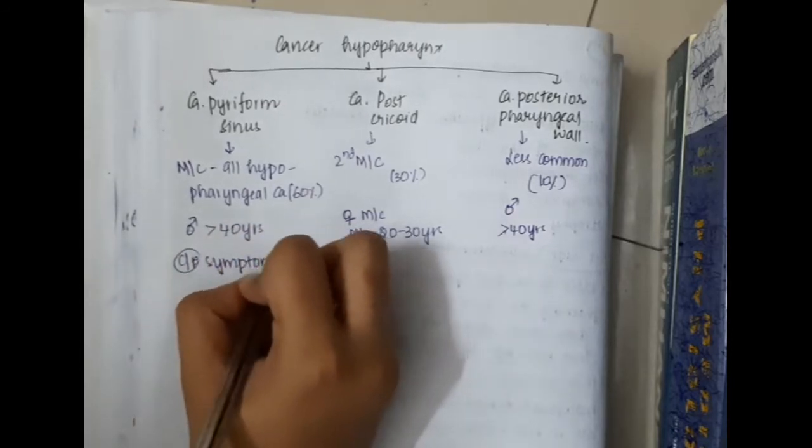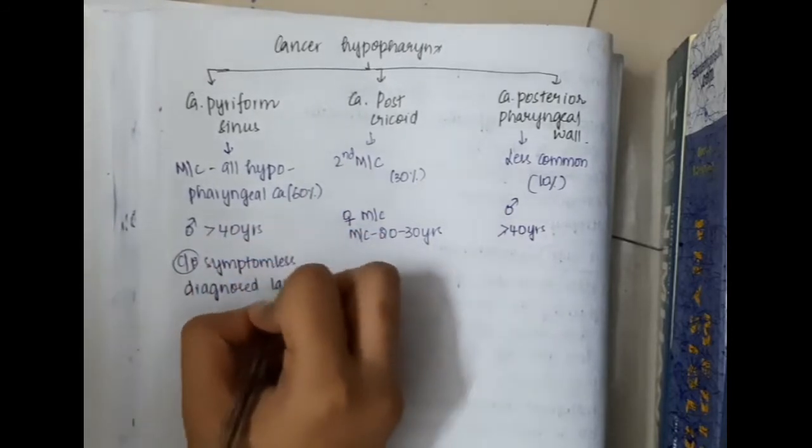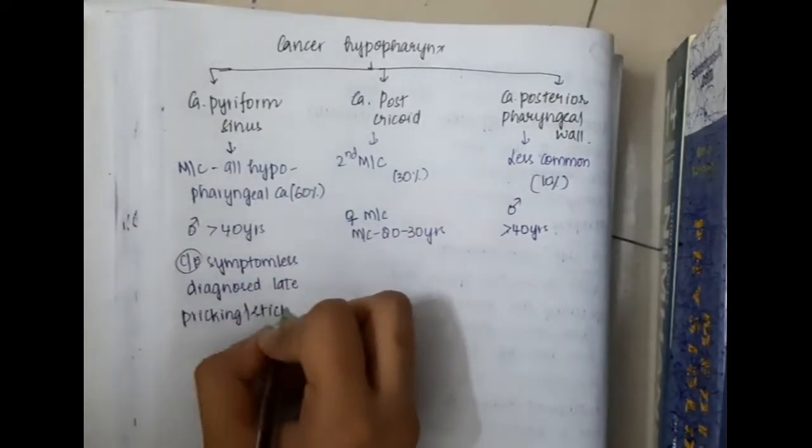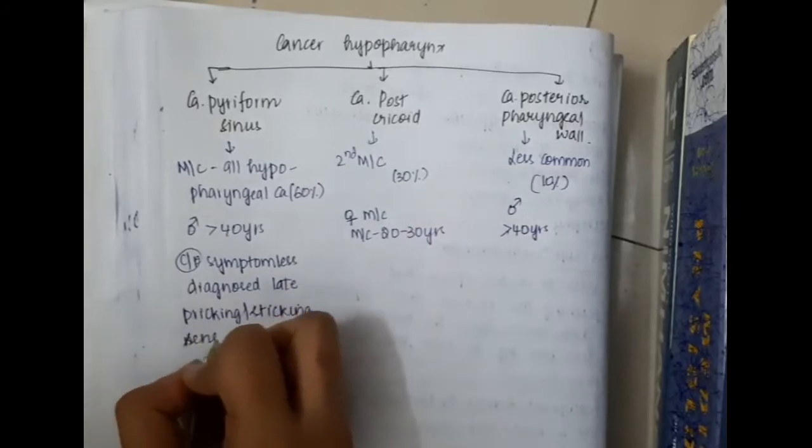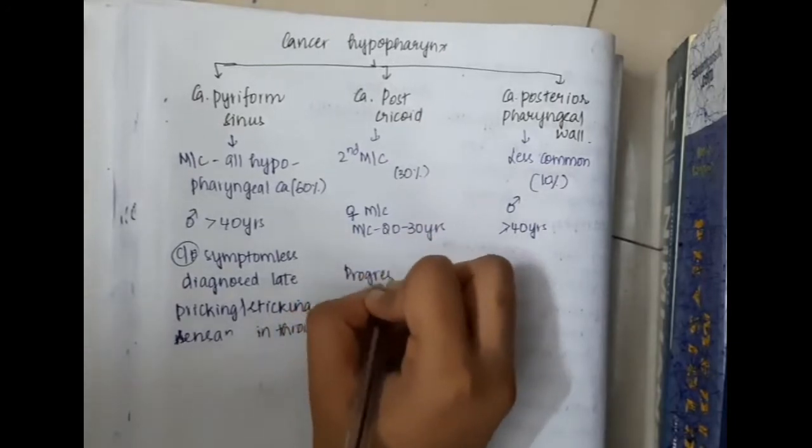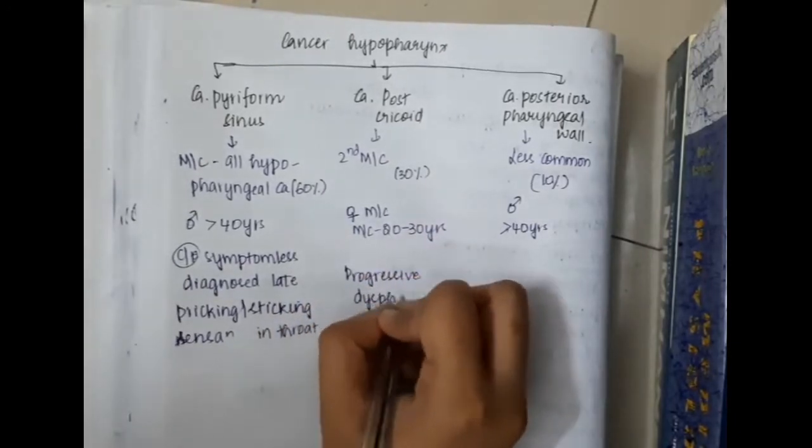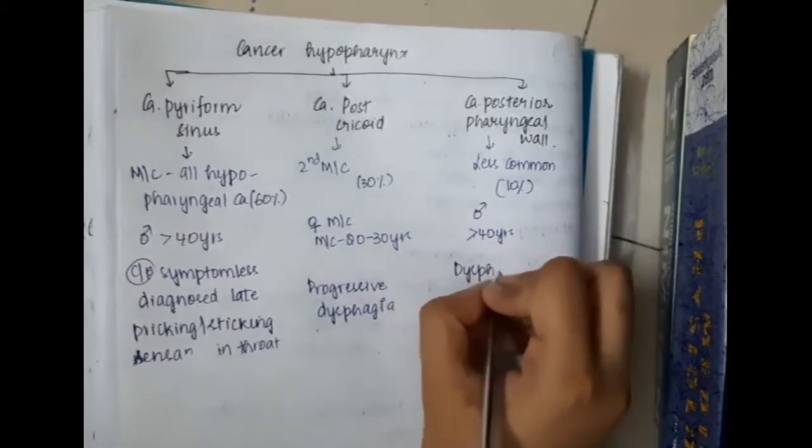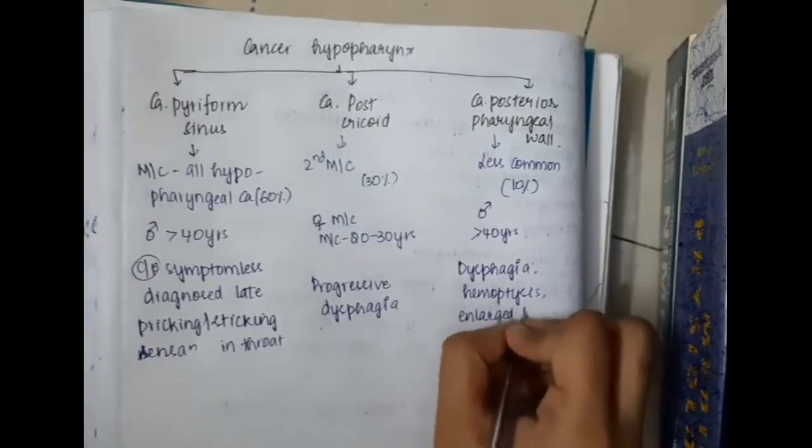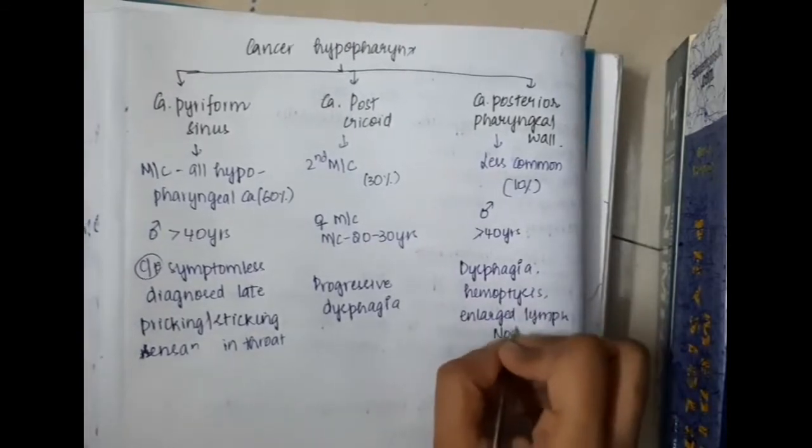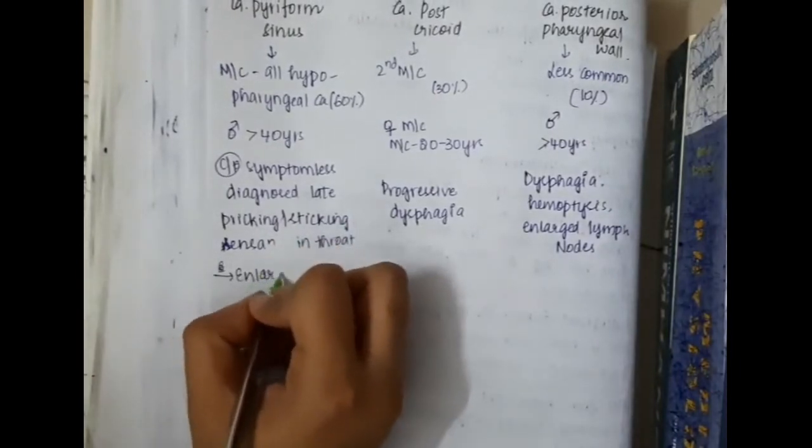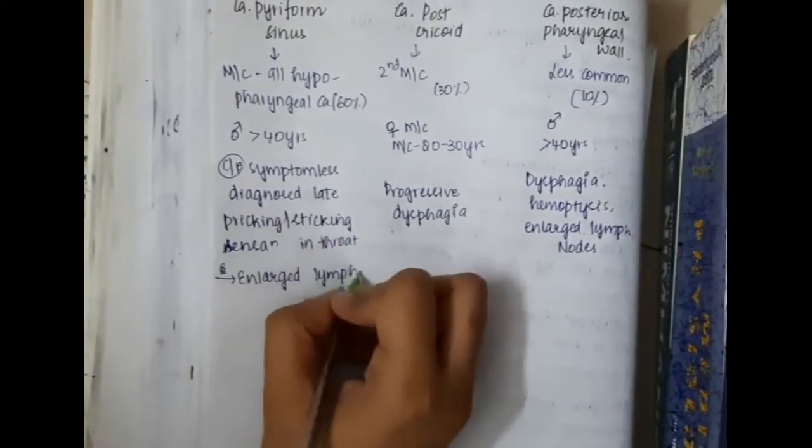The clinical features include: carcinoma pyriform sinus is symptomless and is diagnosed late. Here there is pricking or sticking sensation occurs in the throat. Then we have carcinoma post cricoid region which is due to progressive dysphagia. Then carcinoma posterior pharyngeal wall causes clinical features like dysphagia, hemoptysis and enlarged lymph nodes. In carcinoma pyriform sinus it shows enlarged lymph nodes.